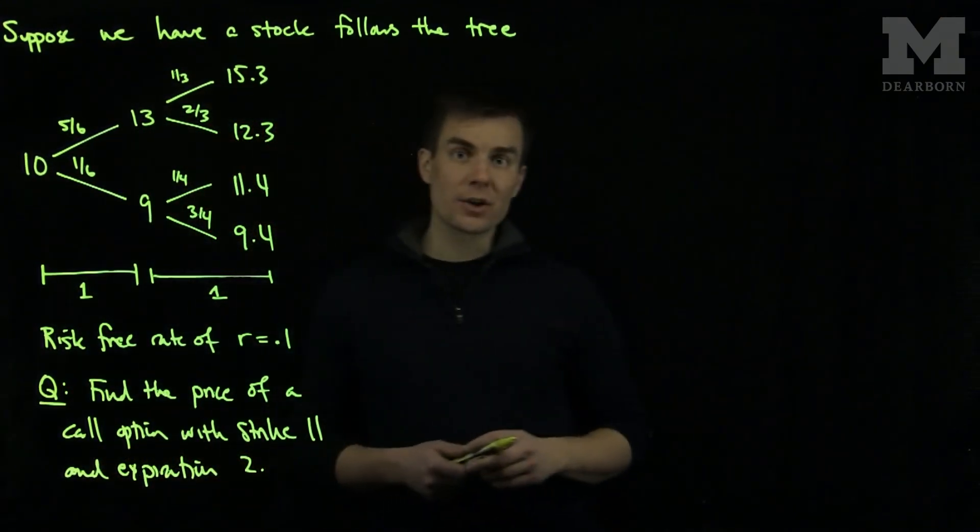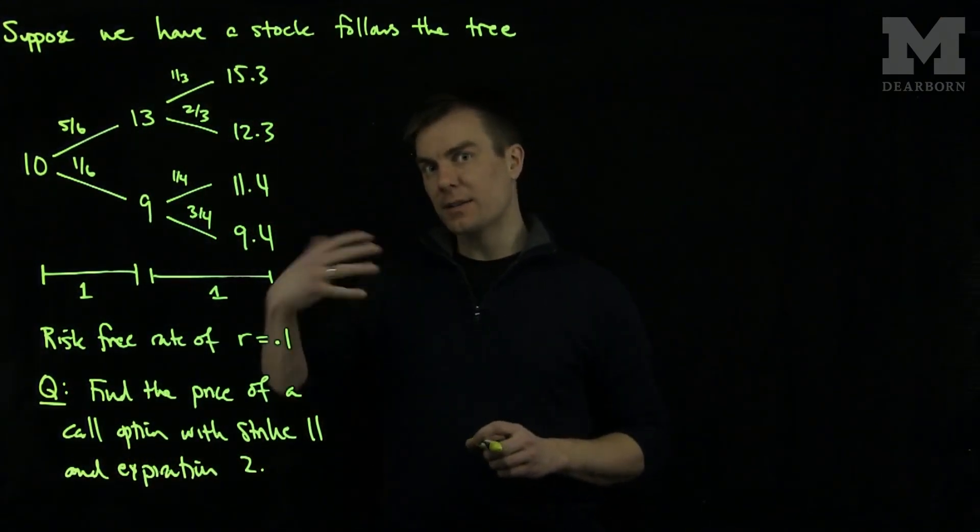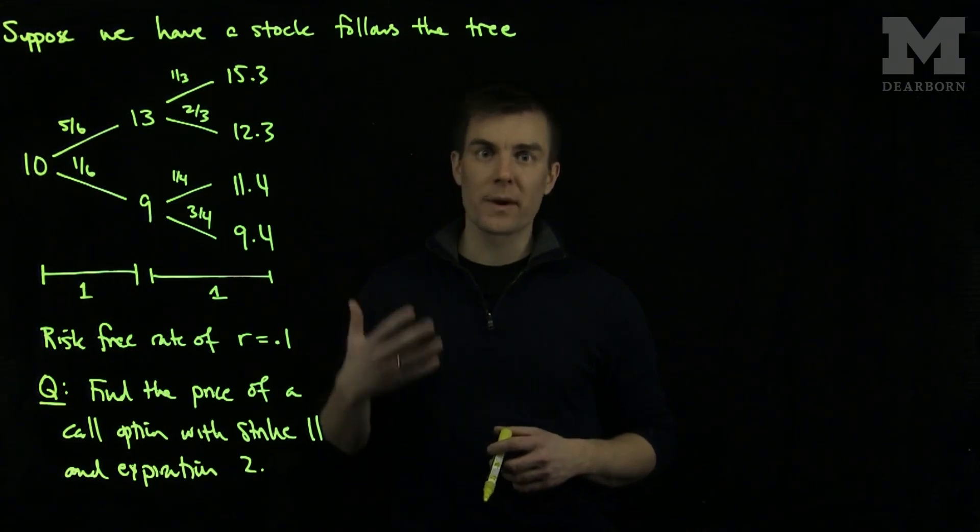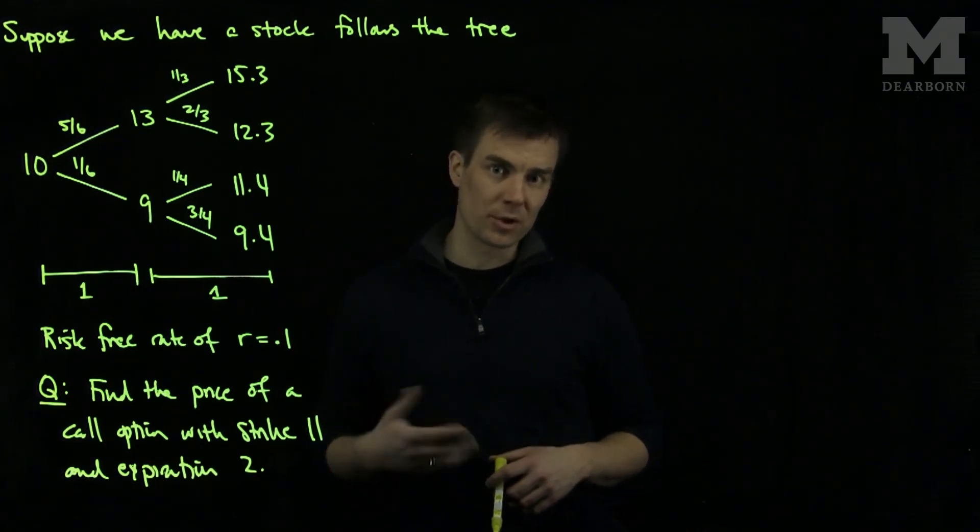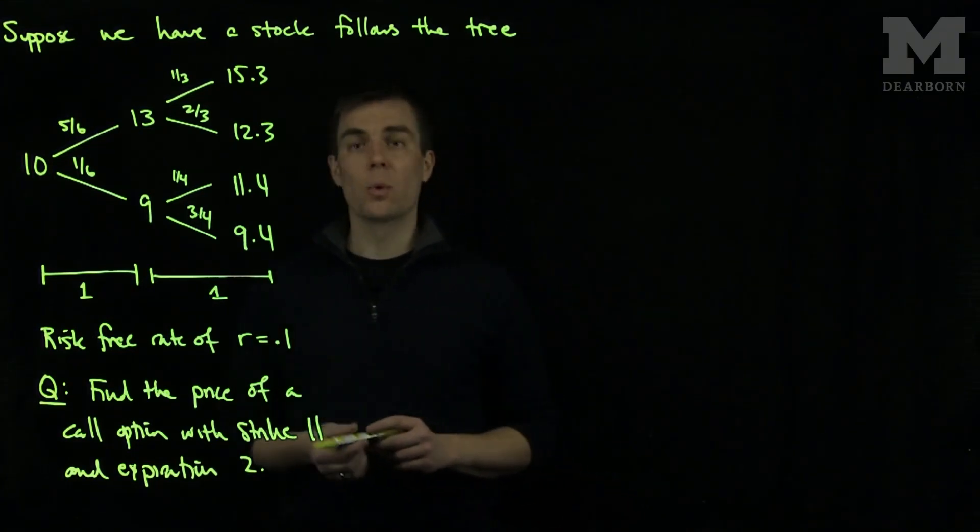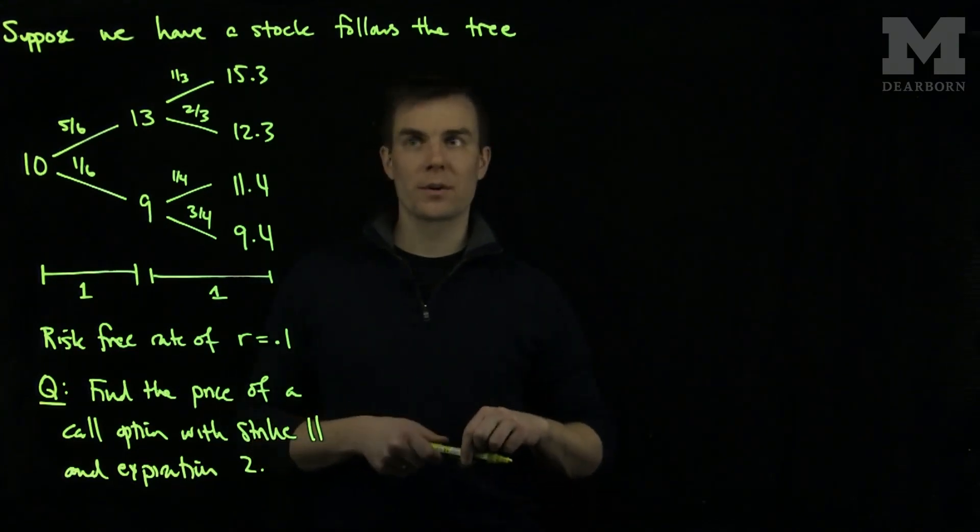So what we will do is we will actually consider this by doing the discounted expected value with respect to the risk neutral probability measure using the Martingale approach. So what we will do is we will figure out the pricing structure.